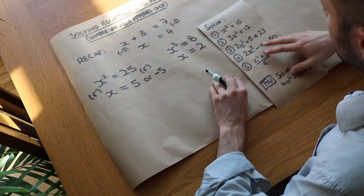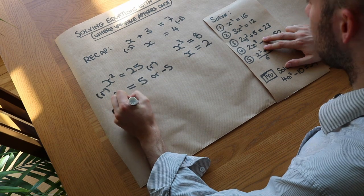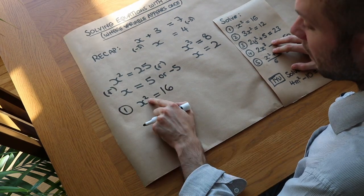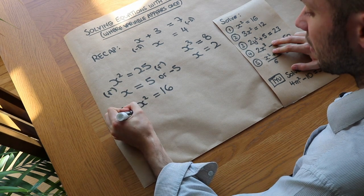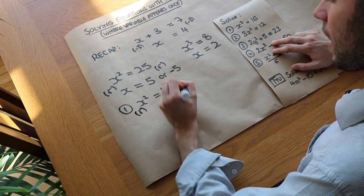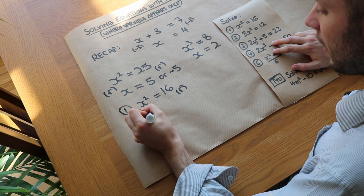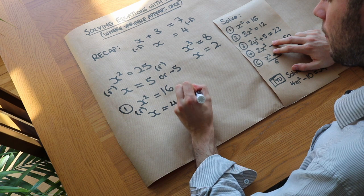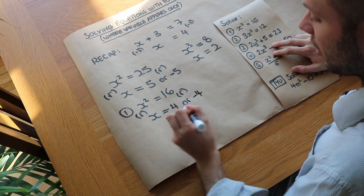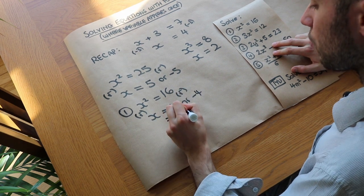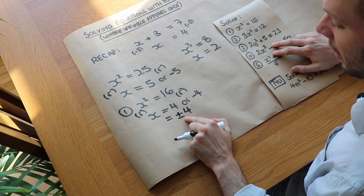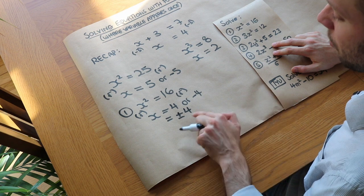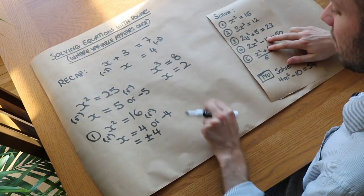Let's do a few examples. First, x squared equals 16. We want to get rid of that squared, so we square root both sides. The square root gets rid of the squared, leaving x, and the square root of 16 is 4 or minus 4. We can write this concisely as plus or minus 4 — it could be positive 4 or negative 4.